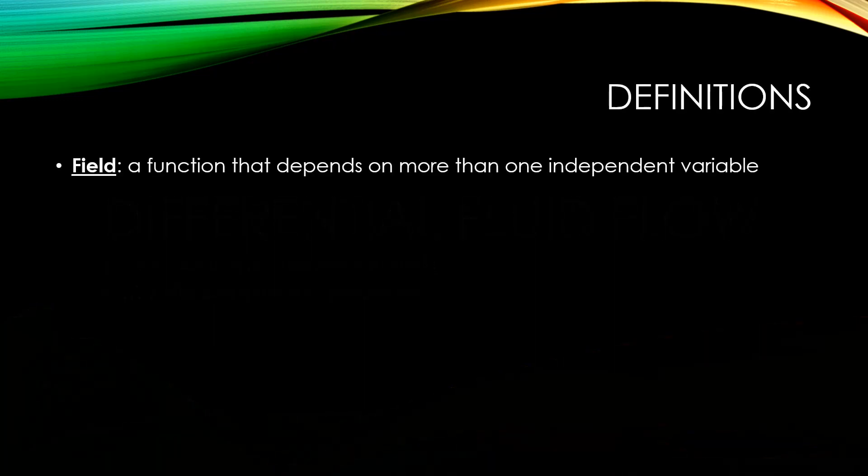Following that line, let's define a field as a function that depends on more than one independent variable. An example of this is a velocity field, which usually depends on the x, y, and z coordinates as well as time.